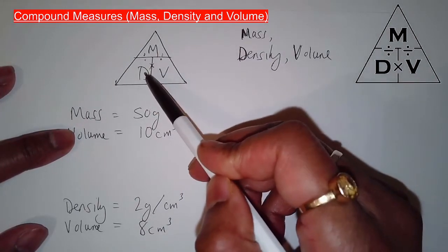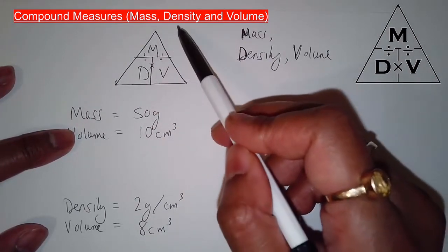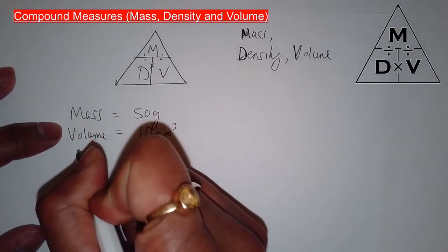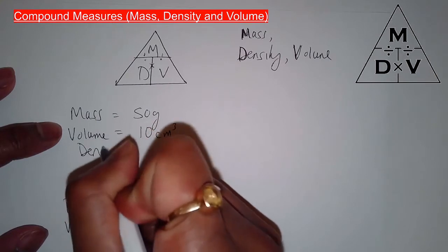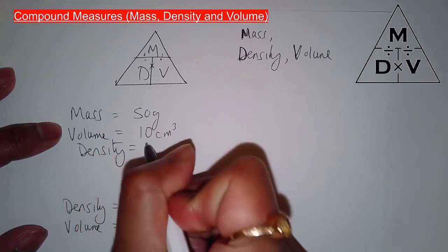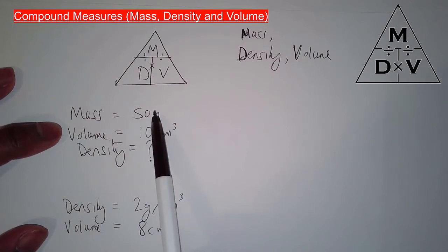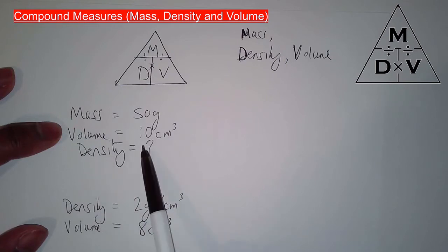Here's our mass-density-volume triangle which we're going to use to answer this question. Suppose something has a mass of 50 grams, its volume is 10 cm³, work out its density.